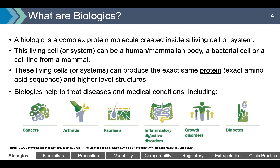What are biologics? A biologic is a complex protein molecule created inside a living cell or system. This living cell or system can be a human or mammalian body, a bacterial cell, or a cell line from a mammal. Examples include transgenic rabbits, E. coli bacteria, or Chinese hamster ovary cell lines. These living cells or systems can produce the exact same protein — the exact amino acid sequence and higher-level structures. Biologics help treat diseases including cancers, arthritis, psoriasis, inflammatory digestive disorders, growth disorders, and diabetes.